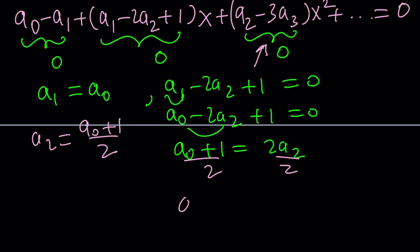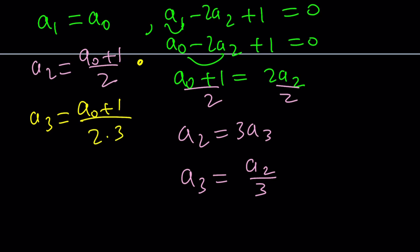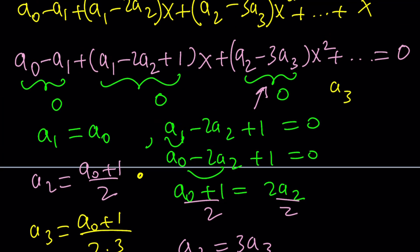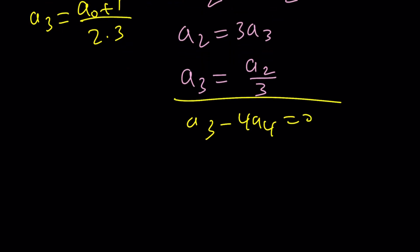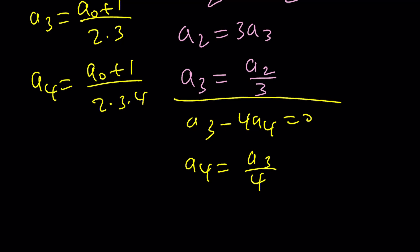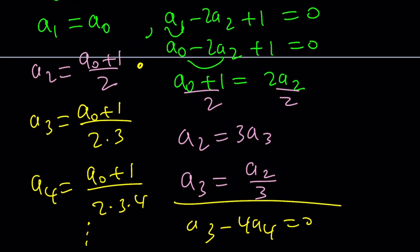From the third equation, a sub 2 equals 3 a sub 3, so a sub 3 equals a sub 2 divided by 3, which is (a sub 0 plus 1) divided by 2 times 3 — that's 3 factorial. Continuing, a sub 4 is a sub 3 divided by 4, giving (a sub 0 plus 1) divided by 2 times 3 times 4. The denominators are factorials. The numerator is always (a sub 0 plus 1), which is a constant. We'll use this pattern to do something awesome: separation.